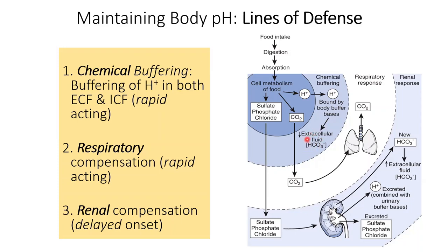Every time a hydrogen ion is secreted out of the cell into the ECF, a bicarbonate ion combines with it, forming carbonic acid, which then converts back to carbon dioxide and water. The important point to log is that bicarbonate is consumed by every hydrogen ion secreted — this bicarbonate needs to be replenished. The bicarbonate available in the ECF gets used up daily by the production of free hydrogen. Carbon dioxide, by contrast, is not a huge problem, as it is exhalable — you exhale it through the respiratory system.